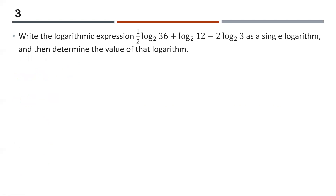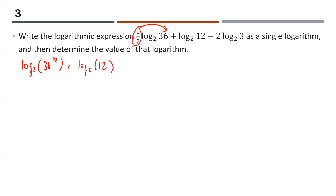Question three: write the logarithmic expression as a single log, then determine its value. Writing it as a single log means using your log laws. The ones I take care of first are coefficients out in front — you move that number in as an exponent. So we get log base 2 of 36^(1/2) plus log base 2 of 12, minus log base 2 of 3^2.